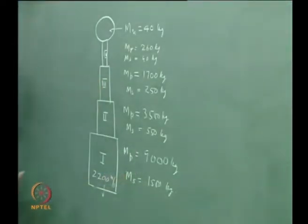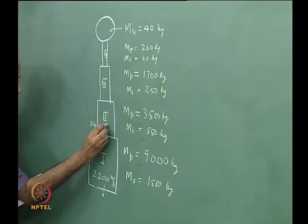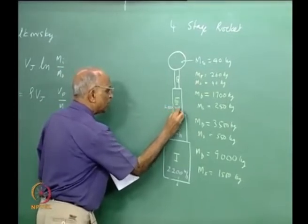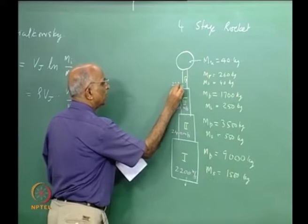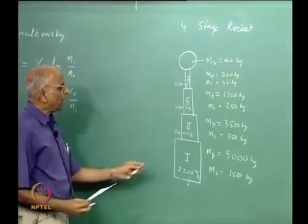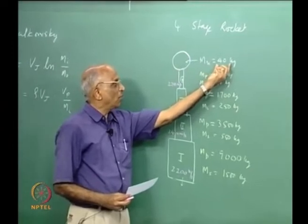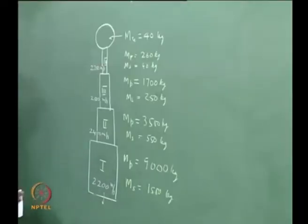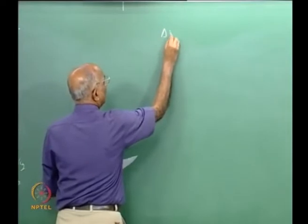The jet velocity of the second stage is slightly higher at 2400 meters per second. The jet velocity of the third stage is 2750 meters per second. We have this four-stage rocket on top of which sits a payload of 40 kg. It takes off from the ground, and our goal in solving this problem is: what is the total ideal velocity — the total delta V — which this rocket provides?